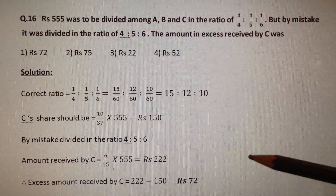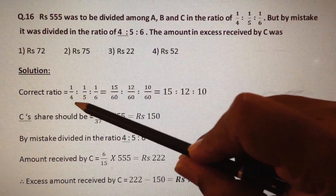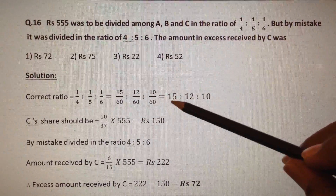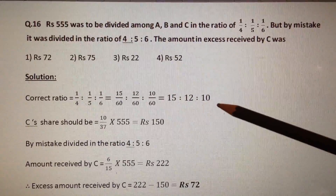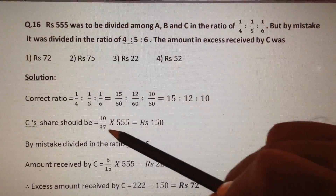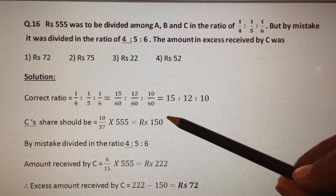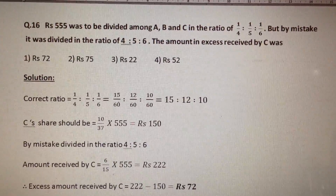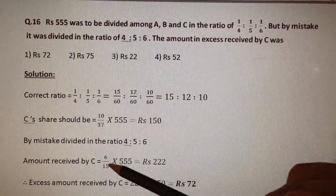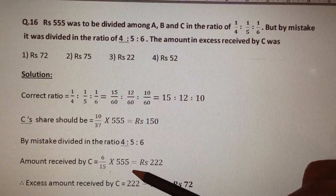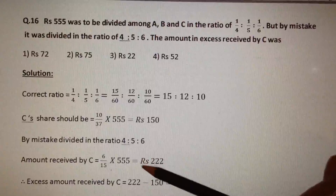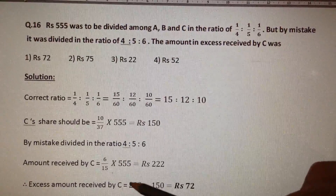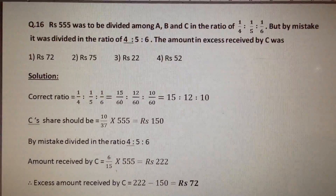The correct ratio to be divided is 1/4 : 1/5 : 1/6, which is nothing but 15/60 : 12/60 : 10/60, which is equal to 15 : 12 : 10. Then C's share should be 10 by 37 into 555, which is equal to 150 rupees. This is the actual amount he has to receive. But by mistake it was divided in the ratio of 4 : 5 : 6. So the amount actually received by C is equal to 6 by 15 into 555, which is equal to 222 rupees. That means he received 222 rupees but he actually has to receive 150 rupees. So excess amount received by C is equal to 222 minus 150, which is equal to Rs. 72. So our answer is option number 1.